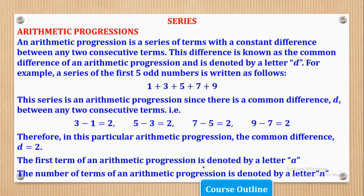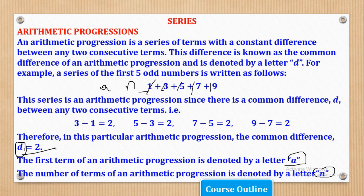The first term of an AP is denoted by symbol A. Letter A is used to denote the first term, letter D is used to denote the common difference, and letter N is used to denote the number of terms. For example, in the series 1, 3, 5, 7, 9: N equals 5, A equals 1 (the first term), and D equals 2 (the common difference). Those are the three key values we need in an AP.